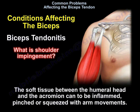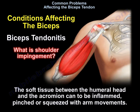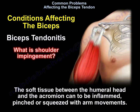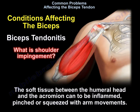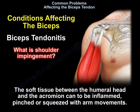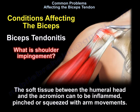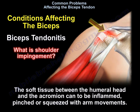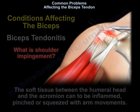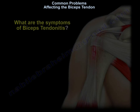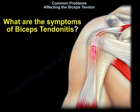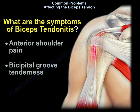What is shoulder impingement? The soft tissue between the humeral head and the acromion can be inflamed, pinched, or squeezed with arm movements. The symptoms of biceps tendonitis include anterior shoulder pain and bicipital groove tenderness.